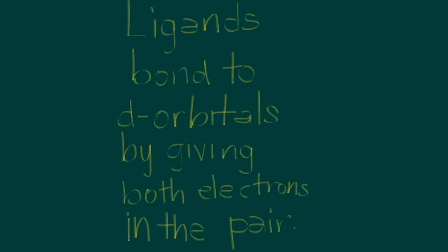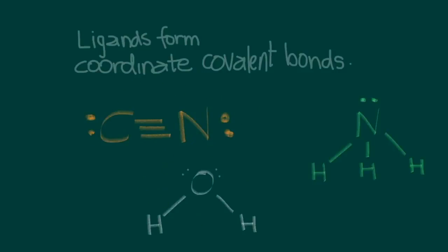Ligands bond to d-orbitals by giving both electrons in the pair. Three examples of ligands: the cyanide ligand, the water ligand, and the ammonia ligand. Water and ammonia each have lone pairs to donate to the d-orbital system and form an association. When this bond is formed with both electrons in the pair being donated by one species, it is described as a coordinate covalent bond.